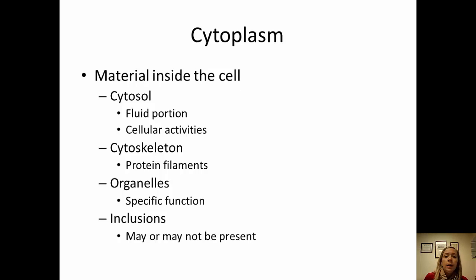The cytoplasm is the material within the cell. The biggest part is the cytosol, which is the fluid portion where cell activities occur. The cytoskeleton provides anchoring units that help with structure and movement. Organelles have specific functions, and inclusions are specific to different systems and may or may not be present.